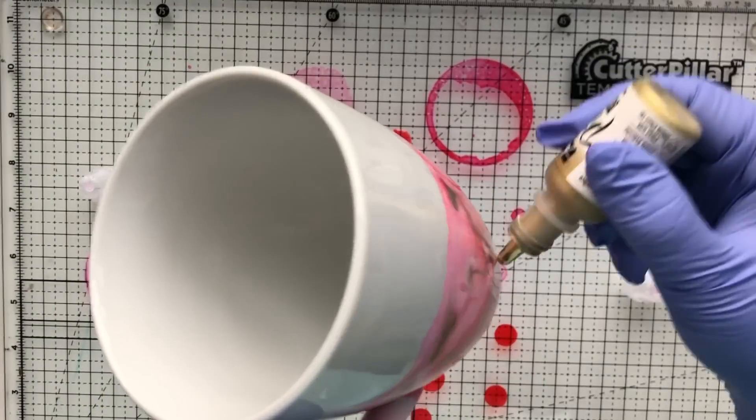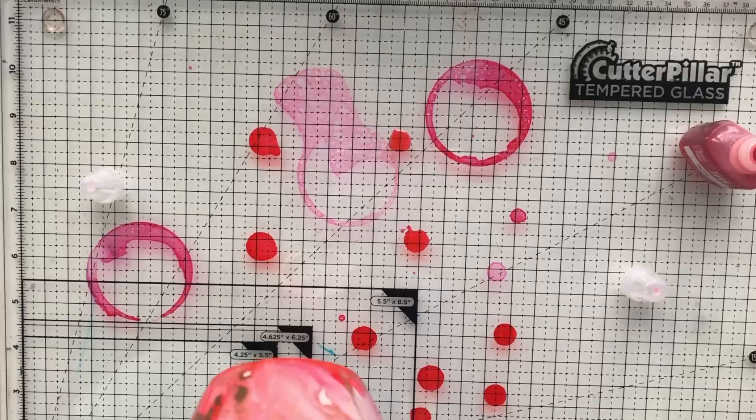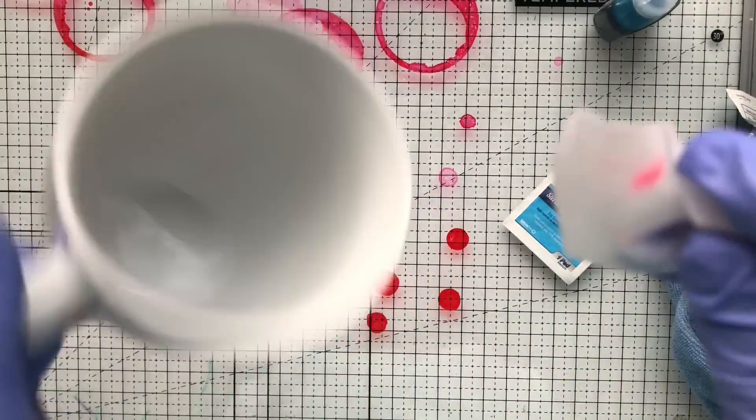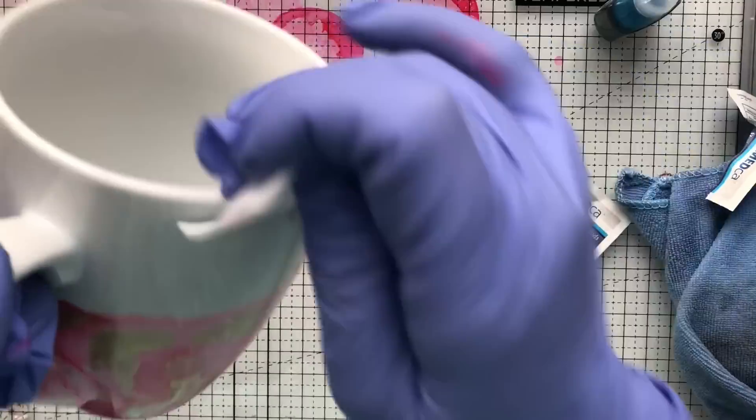I did go in and add a little bit of gold as well. Then to clean off the mug to kind of give it a very clean look, I'm just going with an alcohol swab.